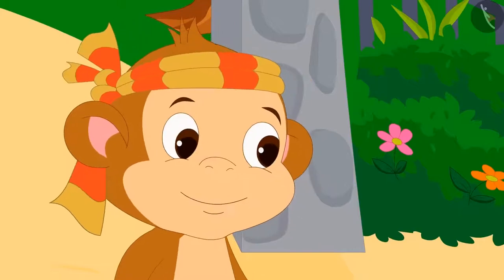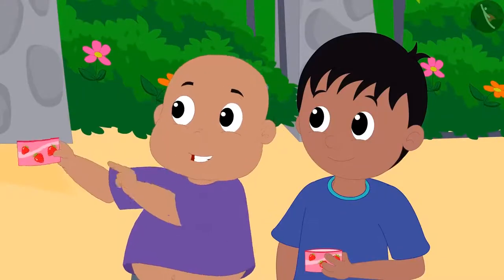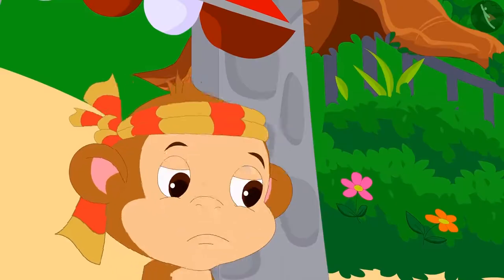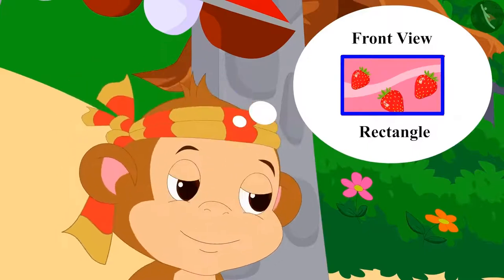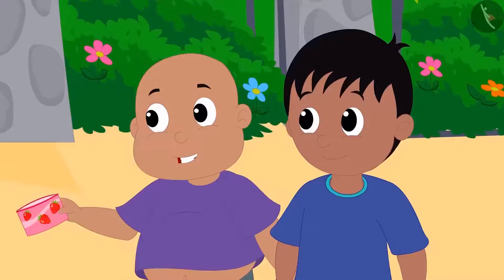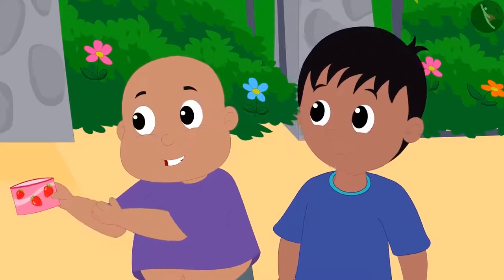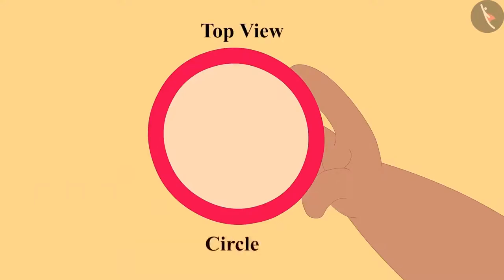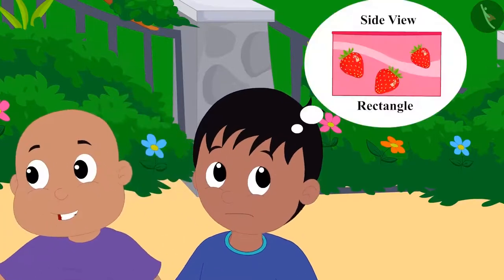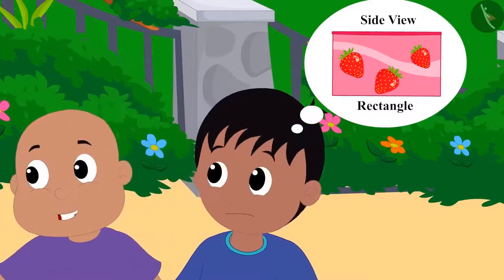Okay. Bablu took an ice cream cup from Babban and asked, what is the shape of this ice cream cup? Babban looked at the cup from the front and immediately replied, rectangle. Bablu then showed him the cup from above — that is the top view — and said, wrong answer. This is a circle. Raju also saw the cup from one side and to him it looked like a rectangle.